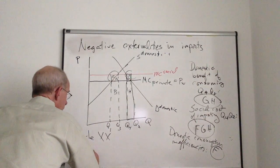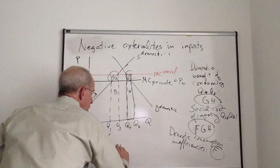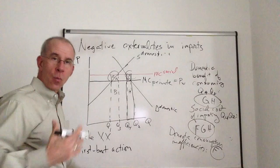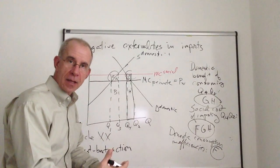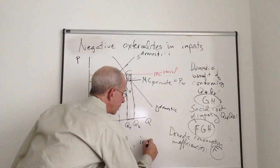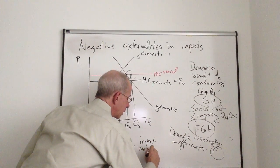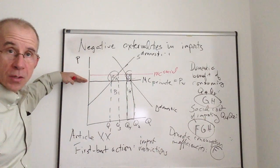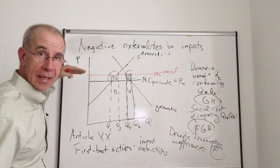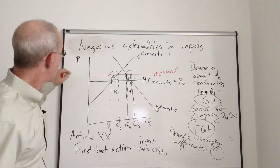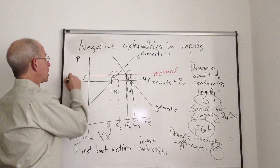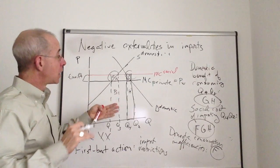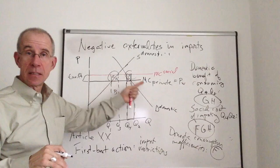So in this case, the first best action, when the externality is in the importation of the good, a way to internalize the externality, the first best action would be import restrictions of some sort. So you raise the marginal price in the market, in the import market, by the difference between these two. If you raise the tariff by that amount, you'll be able to gain back areas E and F.